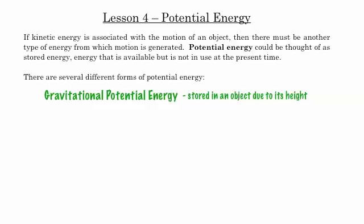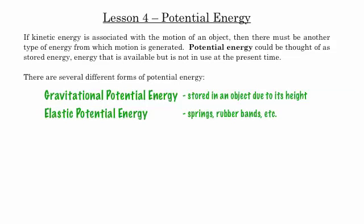So gravitational potential energy, the key word here is stored. It's energy that's stored in an object due to its height above some reference point. Elastic potential energy is energy that's stored in springs or rubber bands, etc.